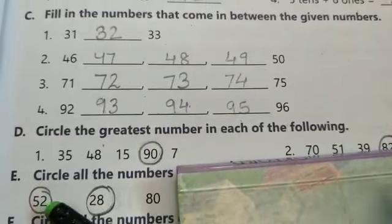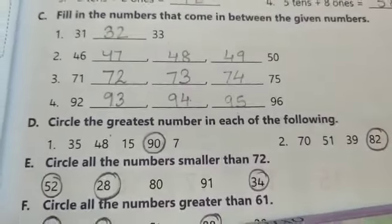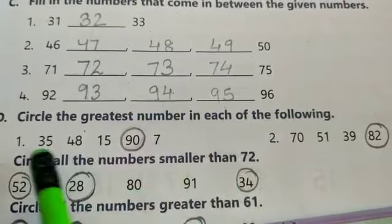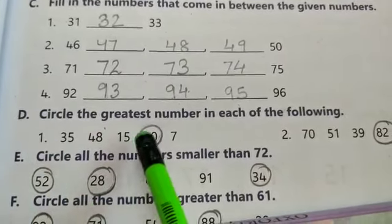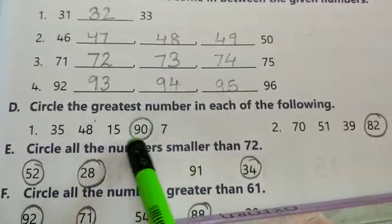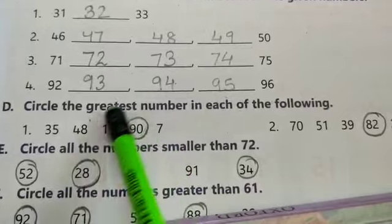Sums number D. We can see some numbers are given here. We have to circle the greatest number in each of the following. 35, 48, 50, 97. So the greatest or the biggest number is 90. We will circle 90.